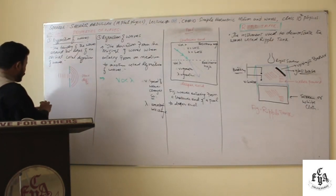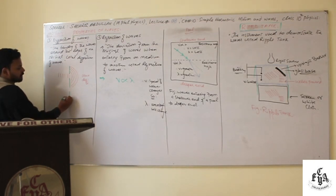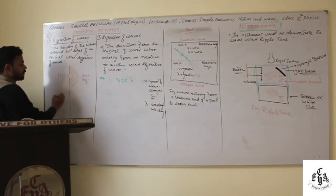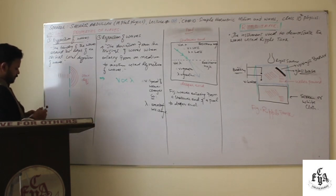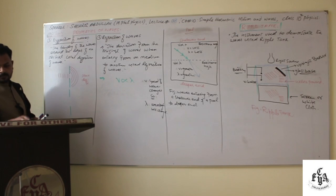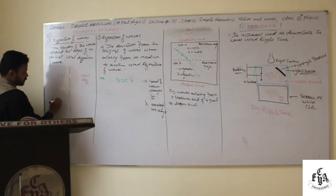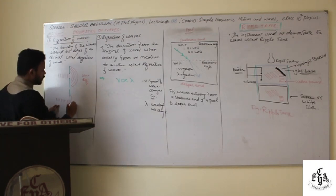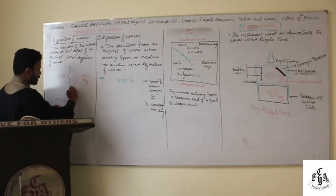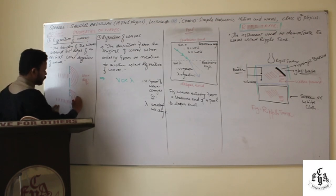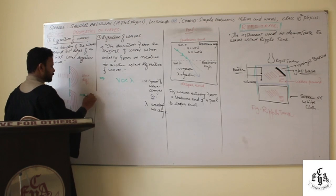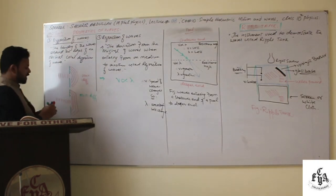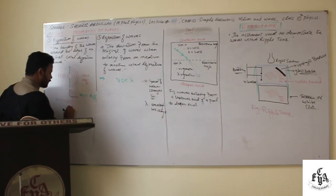Now if the opening is very large compared to the wave size, the waves will bend only at the edges, and the central portion of the waves will be unchanged. In this case there will be minimum diffraction. So remember: the central region remains unchanged when the opening is very large.